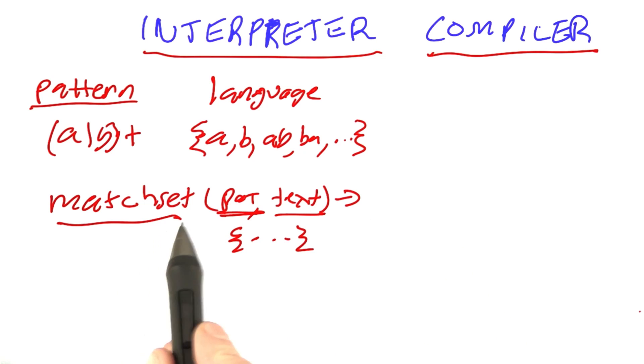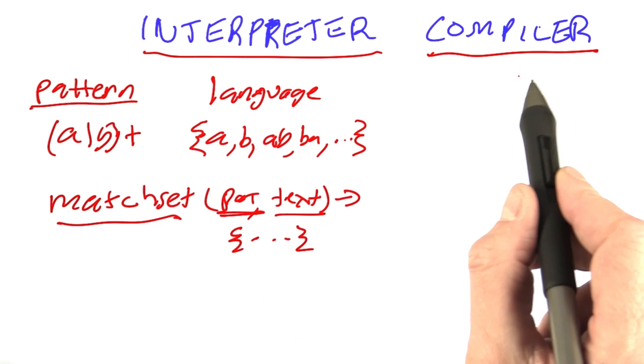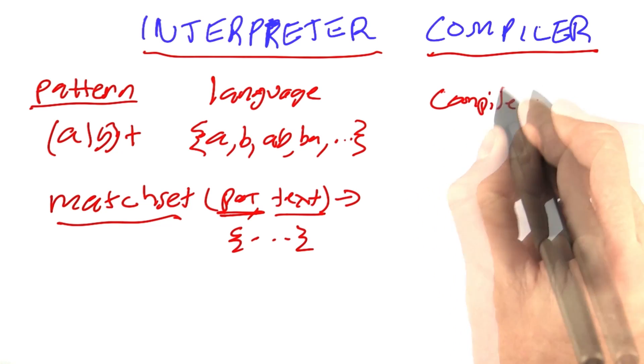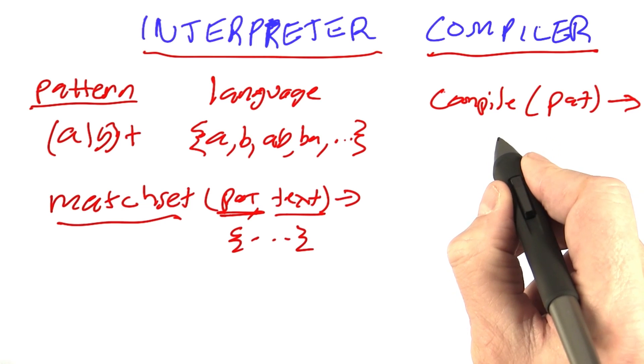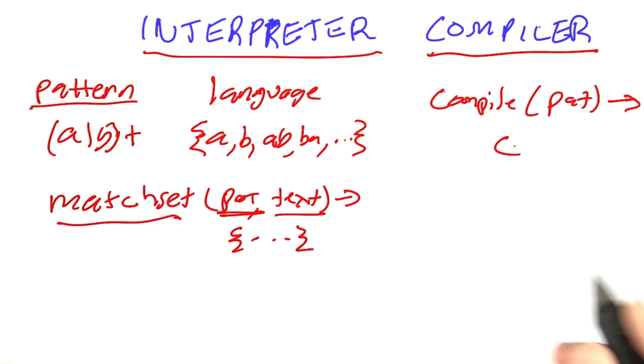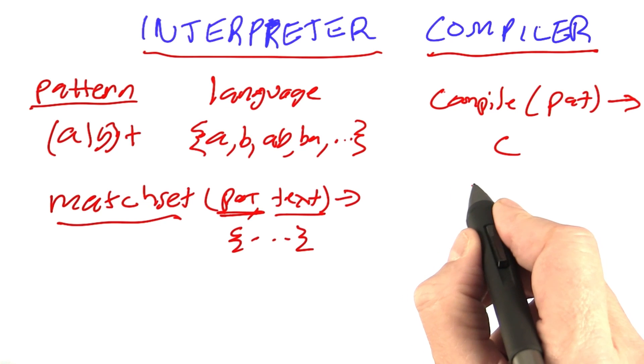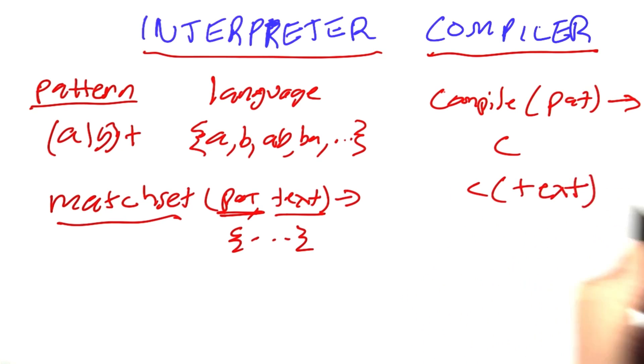Where an interpreter takes a pattern and a text and operates on those, a compiler has two steps. In the first step, there is a compilation function which takes just the pattern and returns a compiled object, which we'll call C, and then there's the execution of that compiled object where we take C and we apply that to the text to get the result.